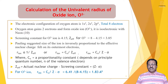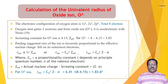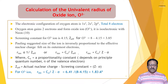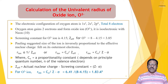The electronic configuration of the oxygen atom is 1s², 2s², 2p⁴. So the total number of electrons present in oxygen is 8. That oxygen atom gains 2 electrons and forms the oxide ion, O²⁻. So it is isoelectronic with the neon ion. In the oxide ion, the screening constant corresponding to the neon configuration is 4.15. And Z effective for O²⁻ we can calculate: Z effective = 8 minus 4.15, which is equal to 3.85.